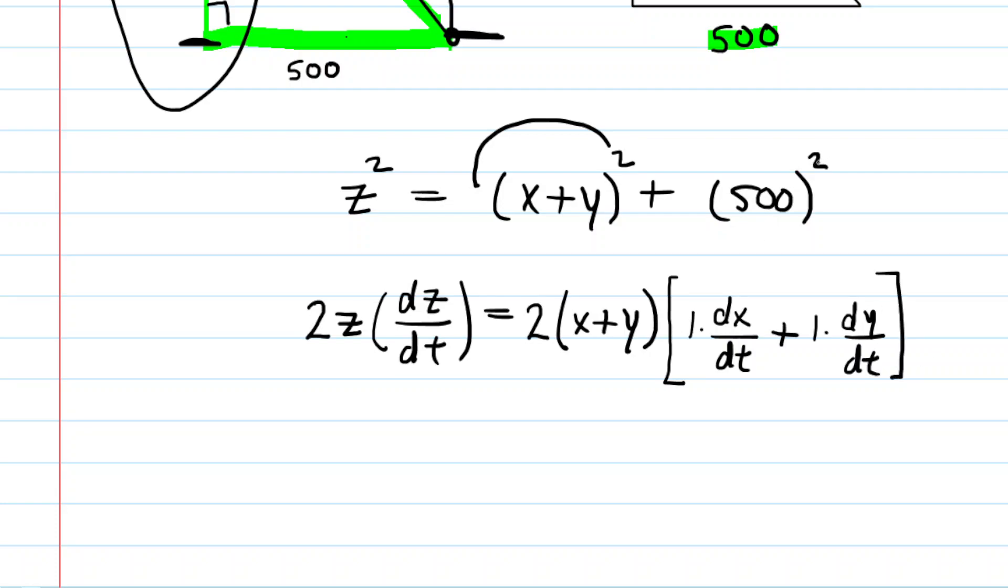And then we get to the 500 squared. Now, 500 is a constant in this problem. The derivative of any constant with respect to time would be 0, so you really just have plus 0 there, which we don't even need to write. Of course. Now we look at this, we can simplify because we have a 2 in the left-hand term and a 2 on the right-hand term. Divide both sides of the equation by 2 and that would cancel.